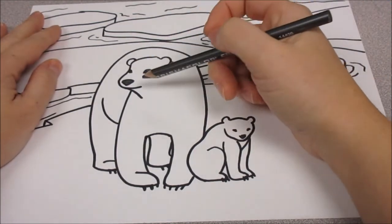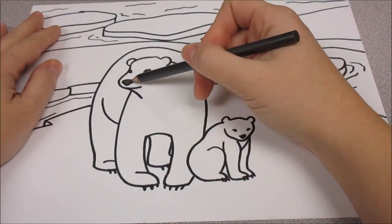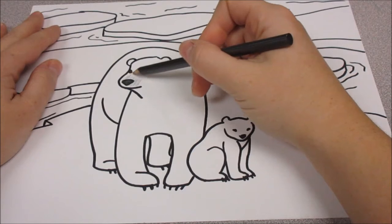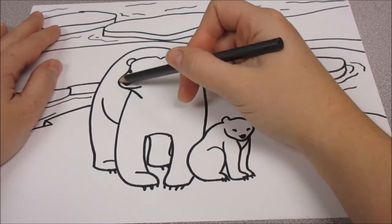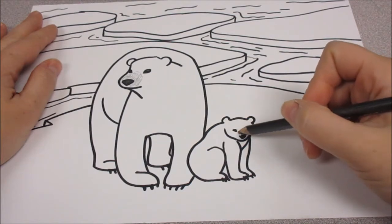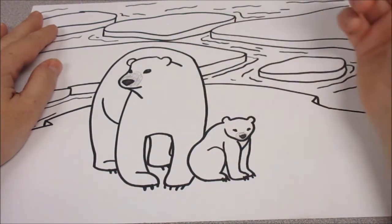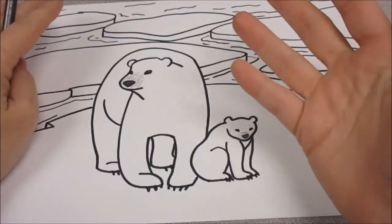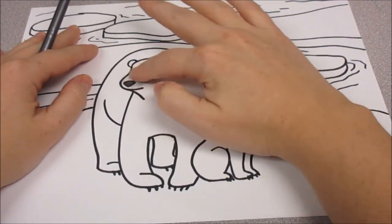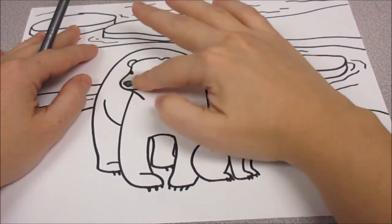And then around the nose, there's a little bit of gray. Just a little bit. Don't go dark with this. It's really soft. And you can even spread it. Pick one finger that you don't mind being smudgy. You can kind of spread your shading.